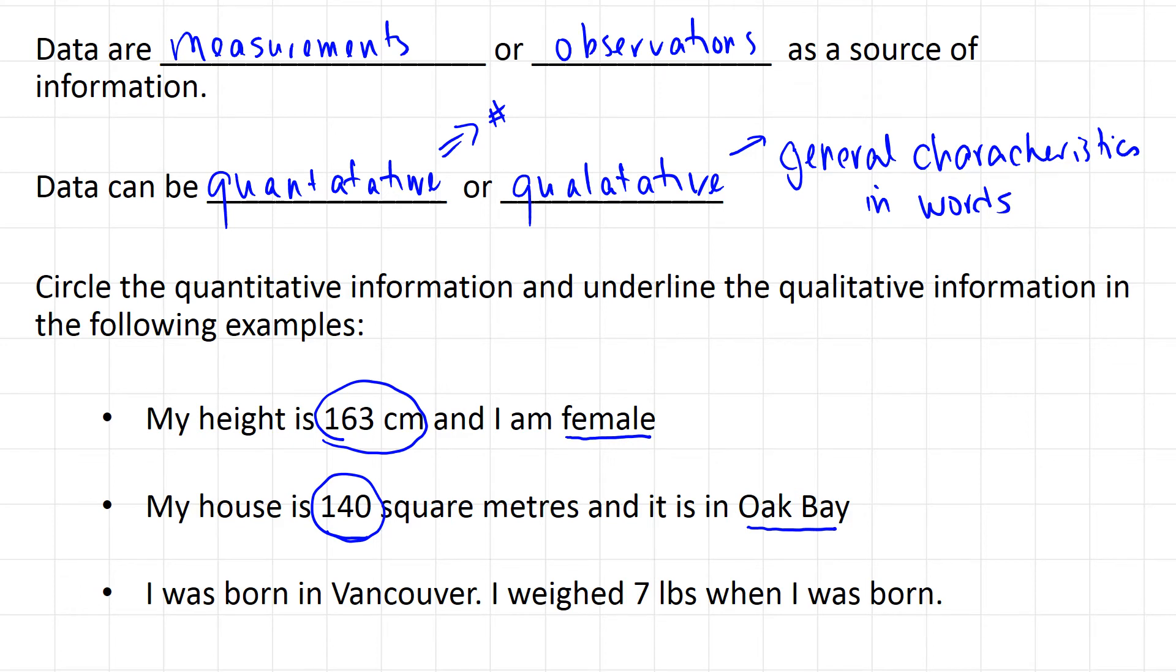I was born in Vancouver and I weighed seven pounds when I was born. So here is the quantitative, the one related to numbers, and here is the descriptive. So there's two types of data: quantitative or qualitative.